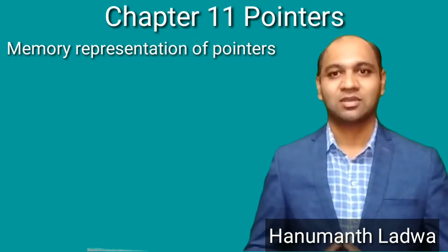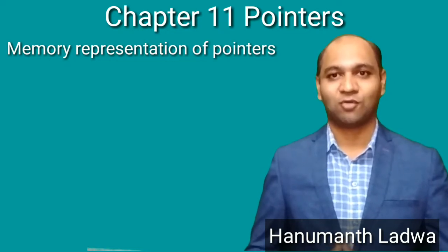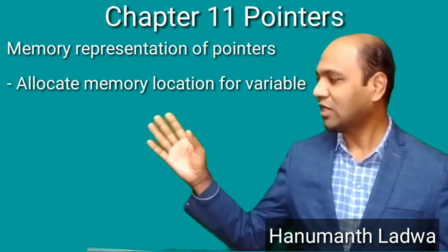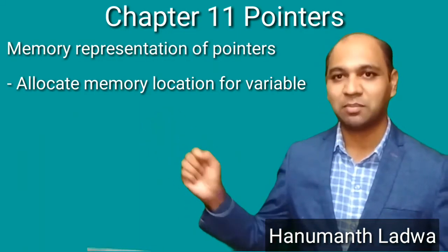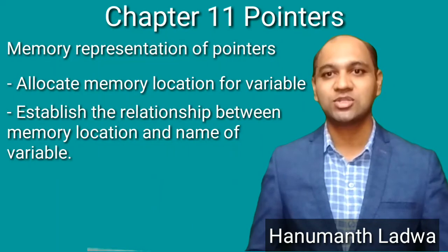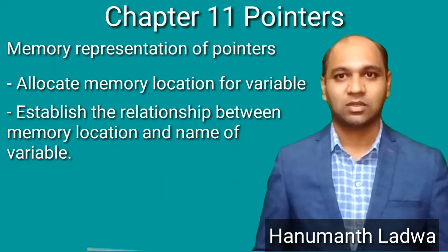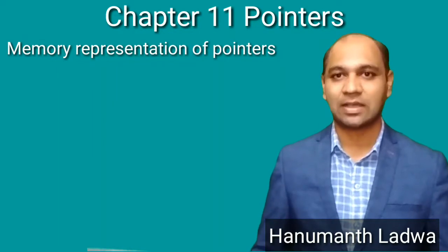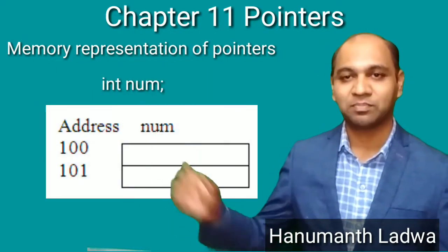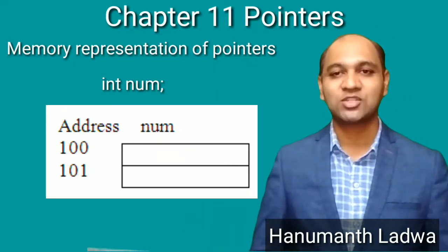The declaration of a variable tells the compiler the following things: first, allocate a memory location for that variable; and second, establish the relationship between that memory location and the name of the variable. For example, if we write 'int num', you can see in the picture that it is going to allocate two bytes of memory with its address.